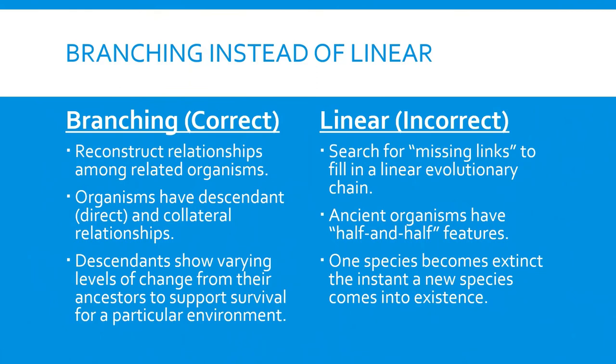Again, this just clarifies that concept. Branching reconstructs relationships among related organisms. You've got direct and collateral relationships. Descendants show varying levels of change from their ancestors to support survival of a particular environment.